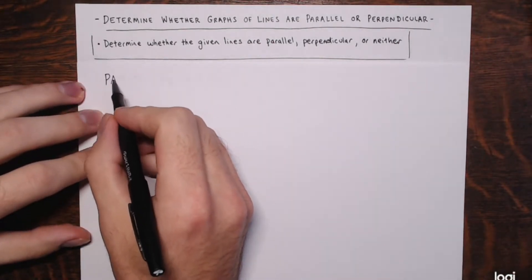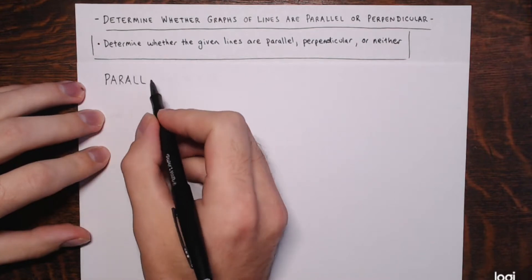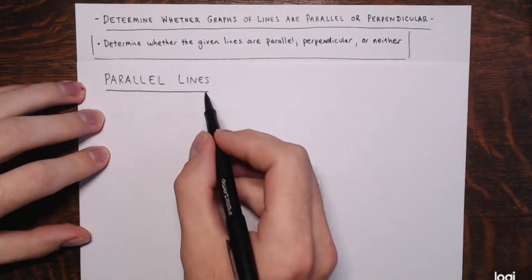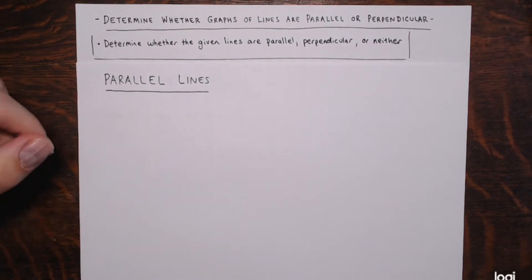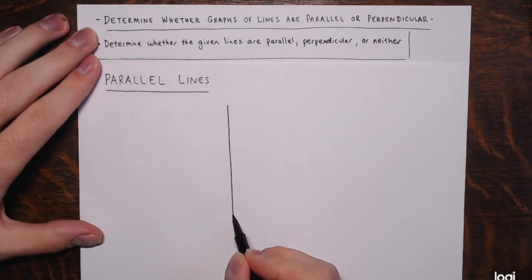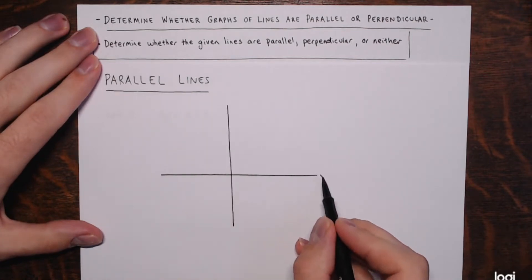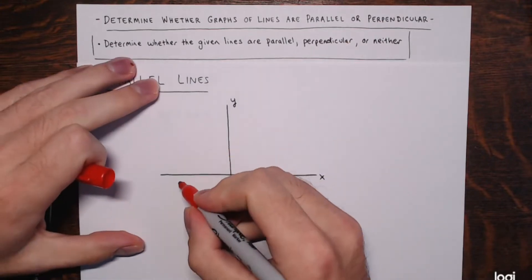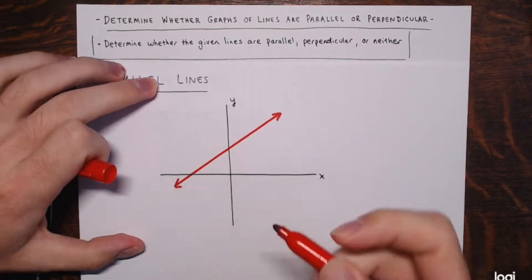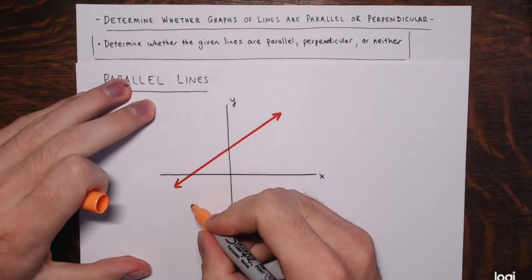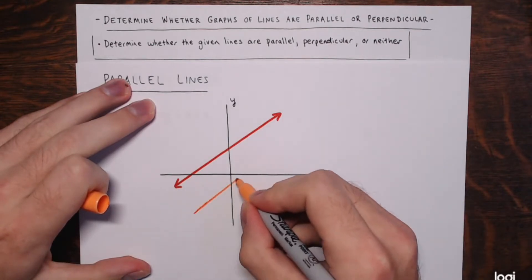Parallel lines are lines that basically run in the same direction and they never intersect. For example, here's the xy-plane. If I draw two lines that are parallel — here's one line, and I draw another line that runs in the same direction but doesn't touch it — it will never cross it.